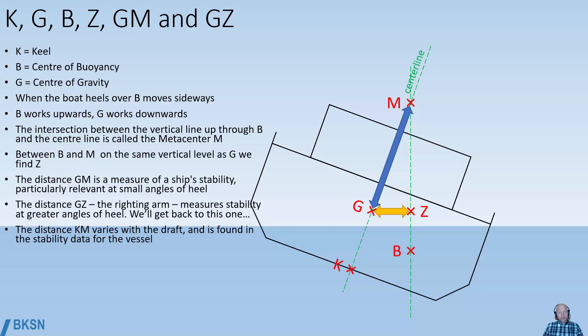The distance KM, from the keel up to the metacenter, varies with the draft of the vessel and is found in the stability data. The distance KM equals the distance from K to G plus the distance G to M. This always applies: KM equals KG plus GM.